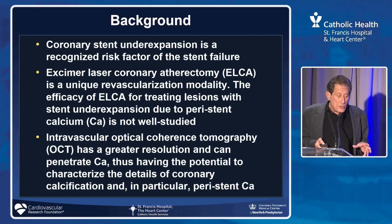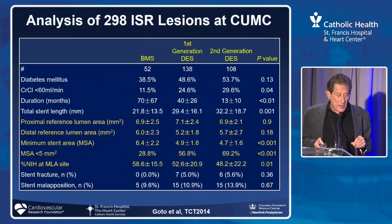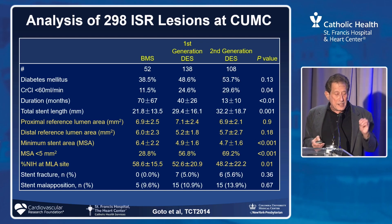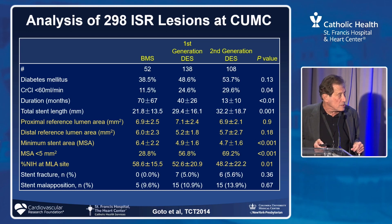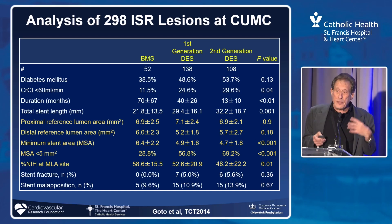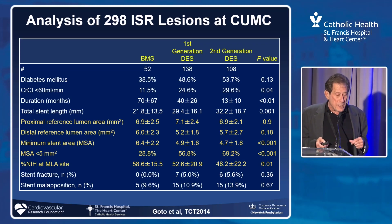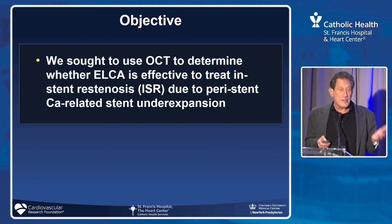Stent underexpansion is a huge issue. This is a series put together by Akiko in the core lab, looking at patients with OCT comparing ELCA versus without ELCA with calcification. This slide shows the evolution of our techniques: looking at 300 within-stent restenosis lesions and MSA in the bare metal era, DES first generation, and DES second generation. I call it the curse of the low-profile stents — they get in there, look okay, but we don't prep them as well. Stent underexpansion constitutes 70% of second generation cases, whereas in the bare metal stent era it was only 28%.